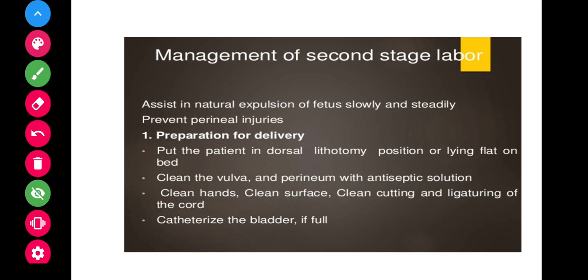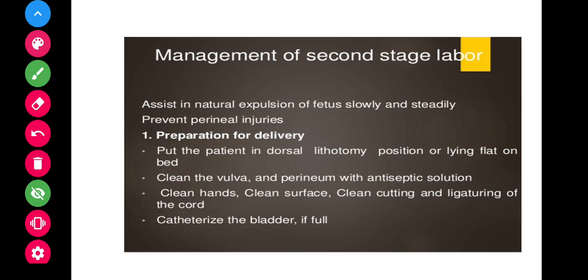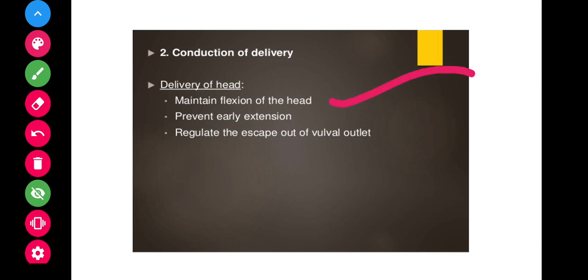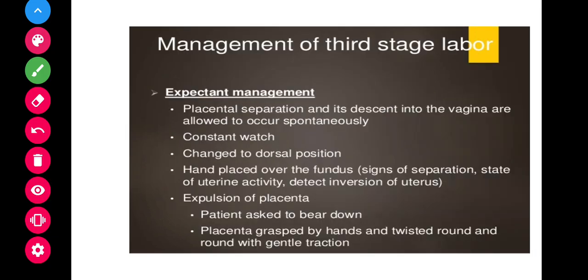Management of the second stage of labor includes preparing for delivery by placing the patient in the dorsal lithotomy position. Clean the vulva and perineum with antiseptic solution, ensure clean hands and a clean surface, perform clean cutting and ligation of the cord, and catheterize the bladder if it is full. During conduction of delivery, maintain flexion of the head, prevent early extension, and regulate the escape at the vulval outlet.